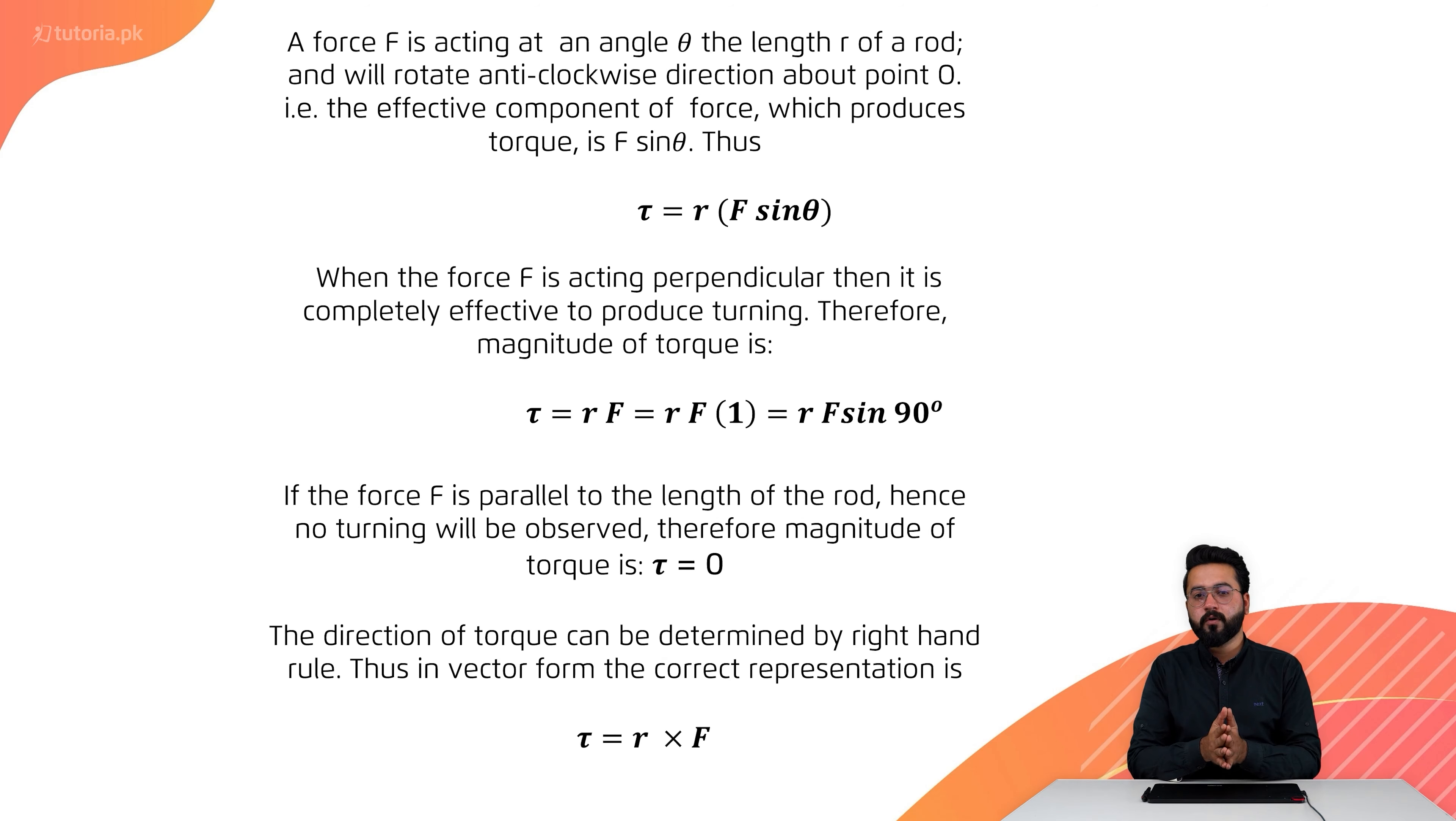If we use vector multiplication or cross product, how can we prove torque? First, force is acting at an angle theta on a rod of length R. The angle with the x-axis will be theta. When we apply force, it will rotate anti-clockwise about point O.